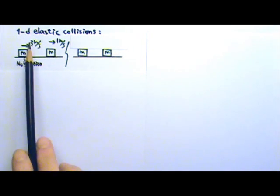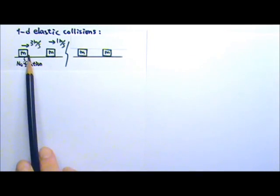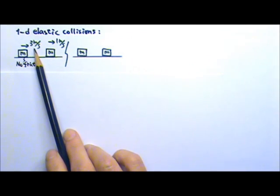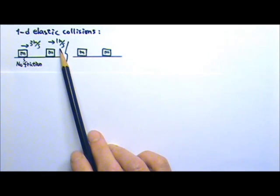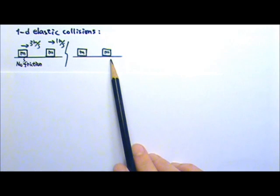Here we have a one-dimensional elastic collision between two boxes M and M. Let's say one box travels to the right at 3 meters per second, while the other box travels to the right at 1 meter per second. Find the final velocities of the two boxes.